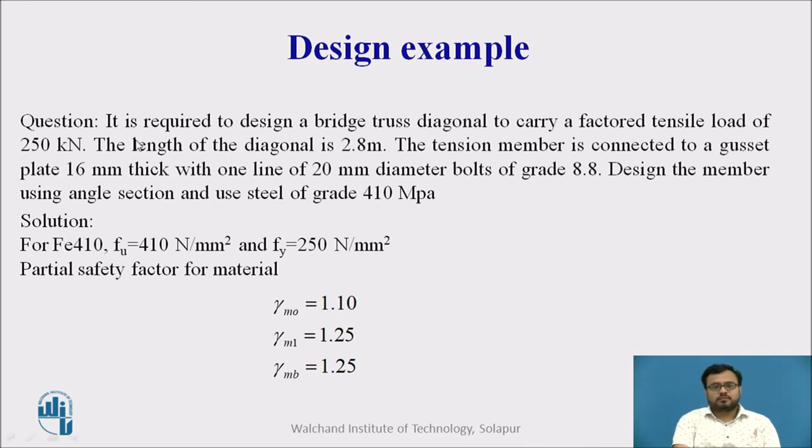Okay, we will start the question. It is required to design a bridge truss diagonal to carry a factored tensile load of 250 kN. The length of member is 2.8 m. The tension member is connected to a gusset plate of 16 mm thickness, with one line of 20 mm diameter bolts of grade 8.8. We have to design a single angle section using the grade of steel as 410 MPa.